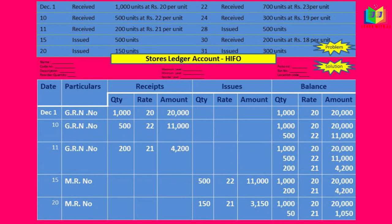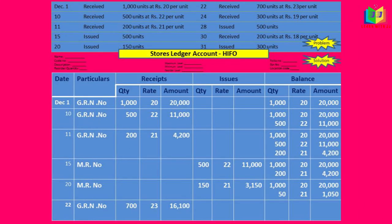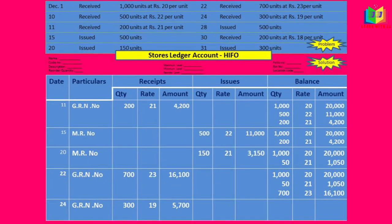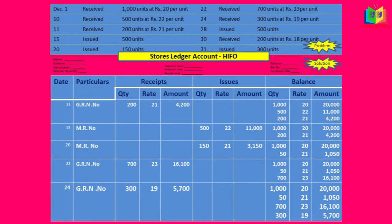On the 22nd we have received, so I will write it in the receipts column: 700 units at the rate of 23 per unit, giving 16,100. I will write it in the balance column under the existing entries. On the 24th we have also received 300 units at the rate of 19 per unit. That too we write in the receipts column, and in the balance column we write it under the 700 units.